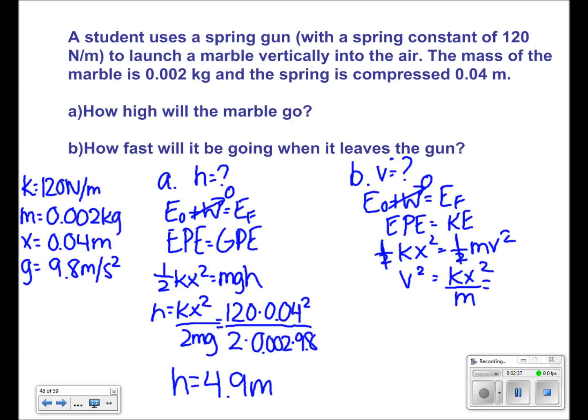So we get that v squared is equal to 120 times 0.04 squared over 0.002.